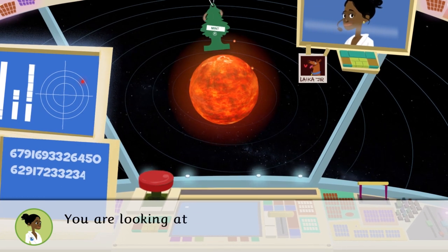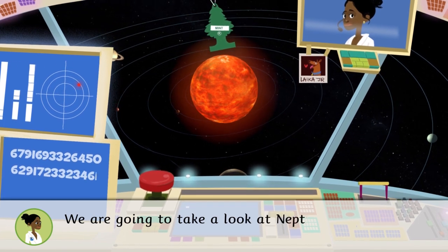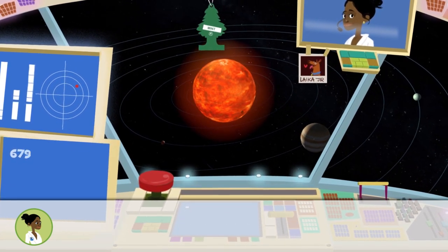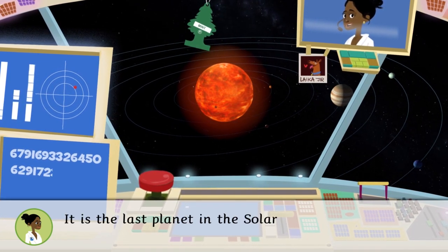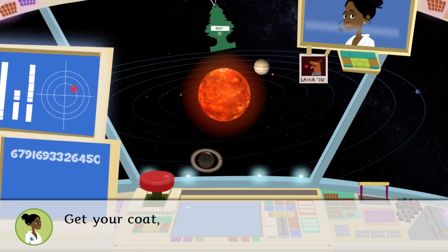You are looking at the solar system. We are going to take a look at Neptune. Do you want to come? It is the last planet in the solar system and therefore the coldest. Get your coat, let's go.